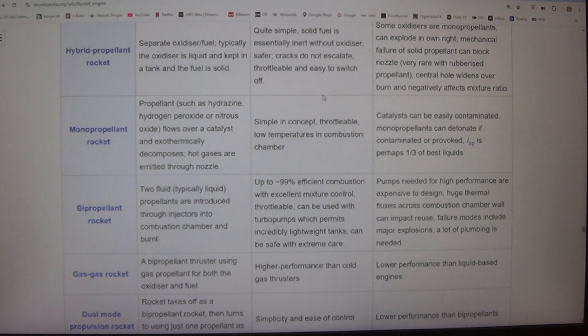Bipropellant rocket - two fluid, typically liquid, propellants are introduced through injectors into combustion chamber and burnt. Up to ~99% efficient combustion with excellent mixture control. Throttleable. Can be used with turbopumps which permits incredibly lightweight tanks. Can be safe with extreme care. Disadvantages: Pumps needed for high performance are expensive to design. Huge thermal fluxes across combustion chamber wall can impact reuse. Failure modes include major explosions. A lot of plumbing is needed.